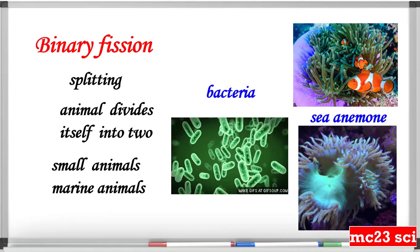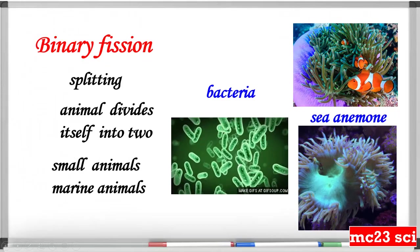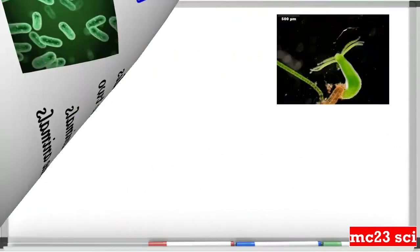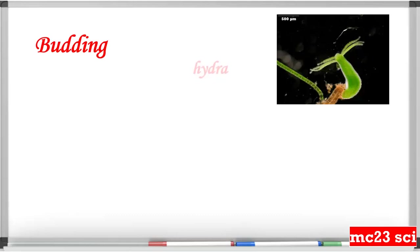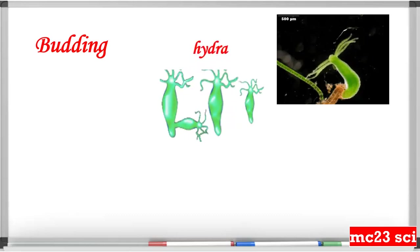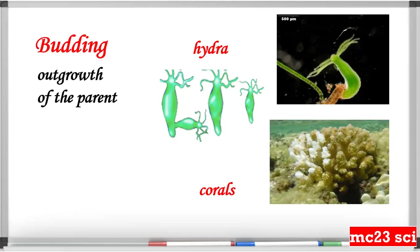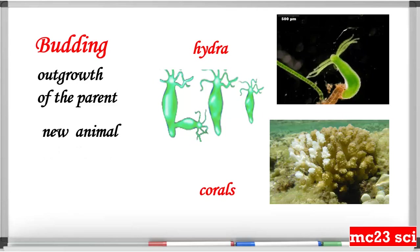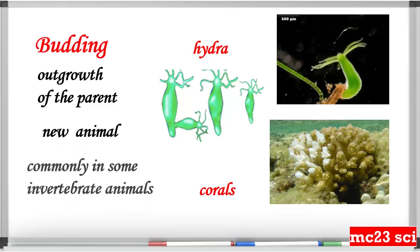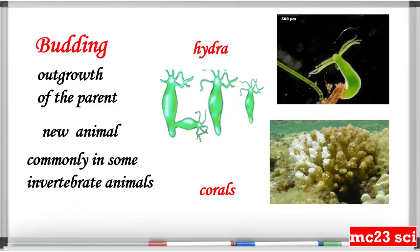In binary fission, the animal divides itself into two. In budding, as in hydra and corals, the outgrowth of the parent animal produces a new animal. This is common in some invertebrate animals.